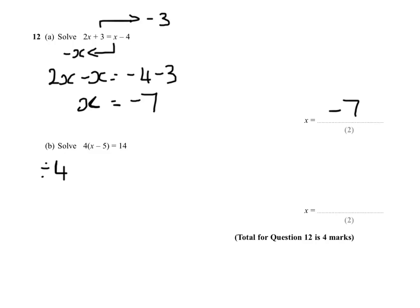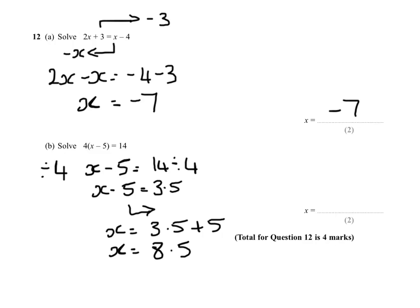If we divide both sides by 4, we get x minus 5 equal to 14 divided by 4, which gives us x minus 5 equal to 3.5. We then bring our minus 5 over to the other side, giving us x equals 3.5 plus 5, which gives us an answer of x equals 8.5.